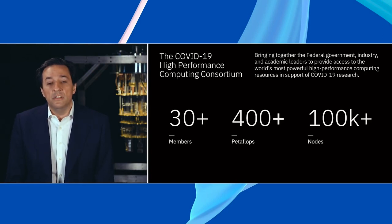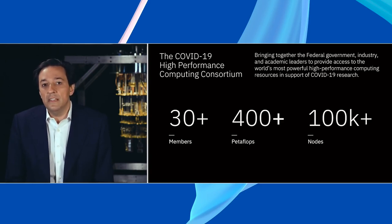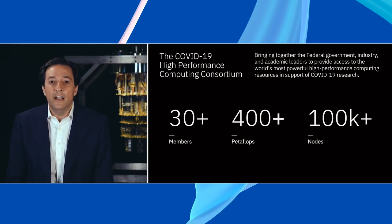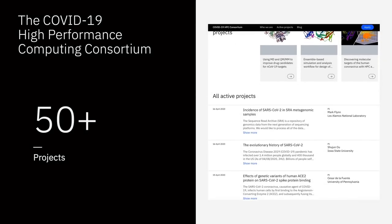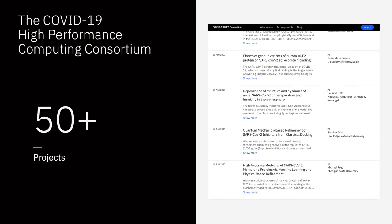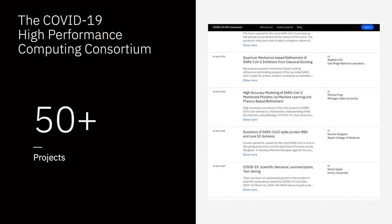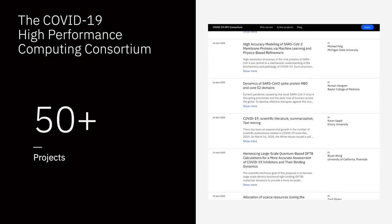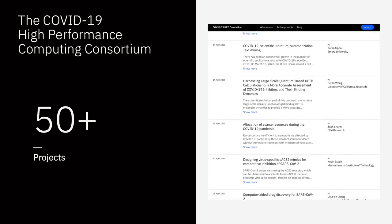In moments of crisis, it is particularly important that we all come together, and that's why we were very proud to coalesce and create in partnership with the federal government and other institutions in the tech sector, as well as academia, the COVID-19 High Performance Computing Consortium, where 30-plus members have aggregated over 400 petaflops of computing power and over 100,000 nodes, to go and pursue a broad portfolio of projects that can help us understand the pandemic, understand the evolution of the virus, and accelerate the pace at which we can develop antivirals and ultimately vaccines.